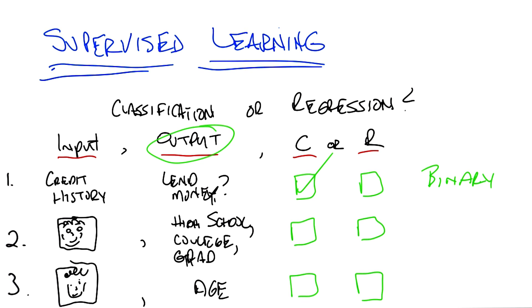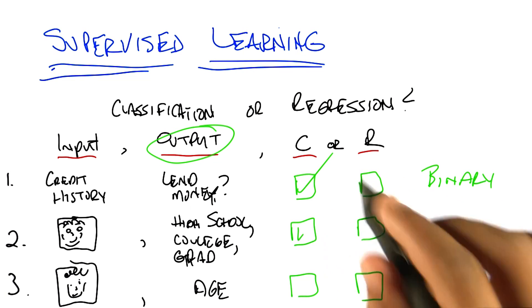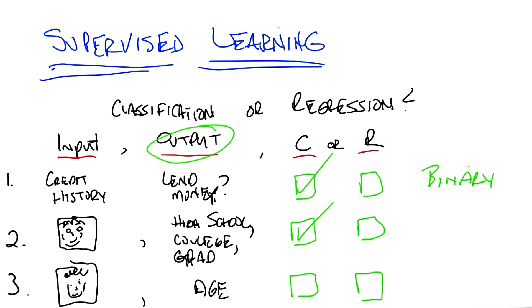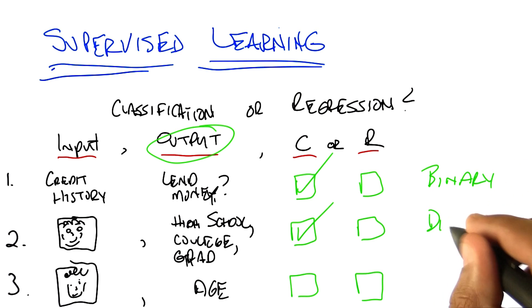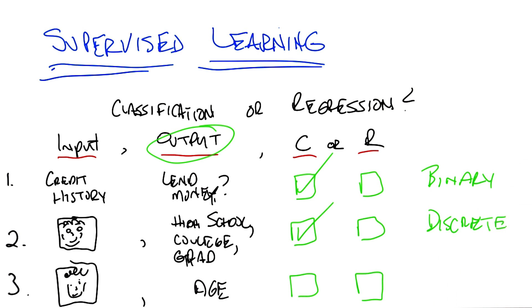What about number two? So number two, it's trying to judge something about where they fall on a scale — high school, college, or grad student. But all that the system is being asked to do is put them in one of those three categories. These categories are like classes, so it's classification. That is also exactly right — classification. We moved from binary to trinary in this case, but the important thing is that it's discrete. It doesn't matter if it's high school, college, grad, professor, elementary school — any number of ways you might describe matriculation status, it is a small discrete set.